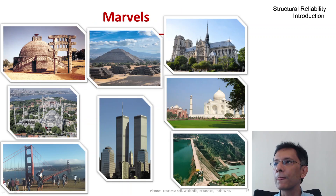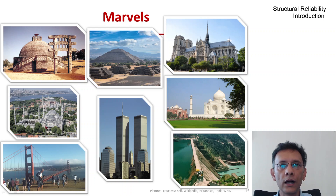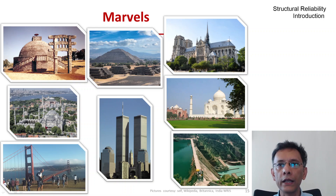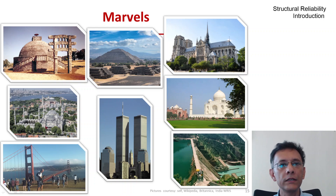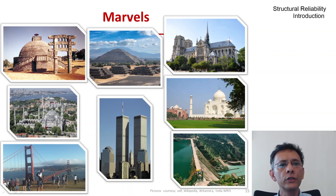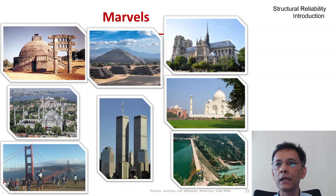Over the millennia, civil engineers and structural engineers have created many marvelous achievements. We have a sample here: the Sanchi Stupa constructed during the 3rd to the 1st century BC; the Pyramid of the Sun during the 1st and 2nd century AD; the Hagia Sophia in the 6th century; Notre Dame in the 12th through the 14th century; the Taj Mahal completed in 1648; the Golden Gate Bridge in 1937; the Bhakra Dam completed in 1963; and the World Trade Center buildings in 1973. Some have been damaged but are being restored, some whose time has passed, some made to fall down, and some that are still serving very well.